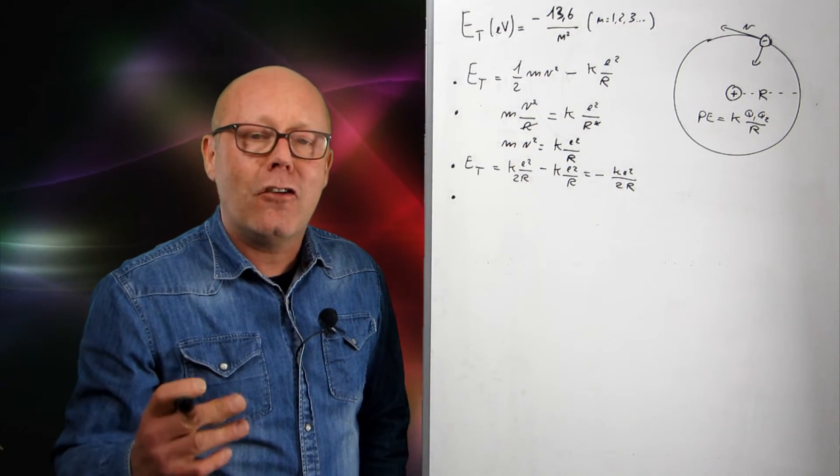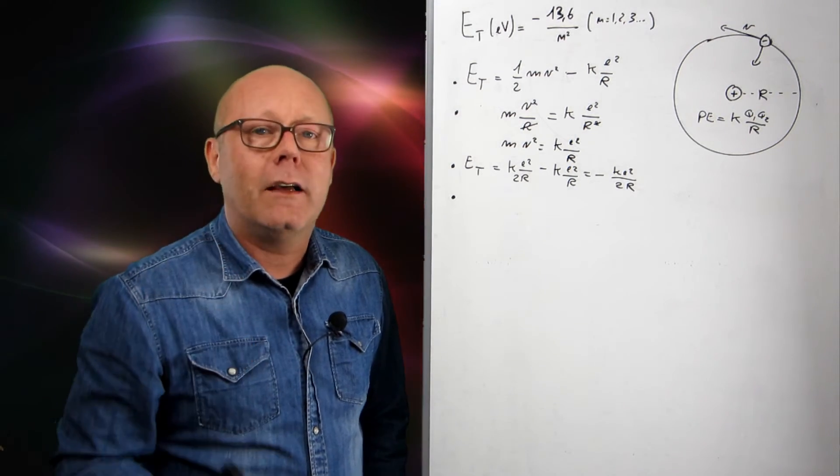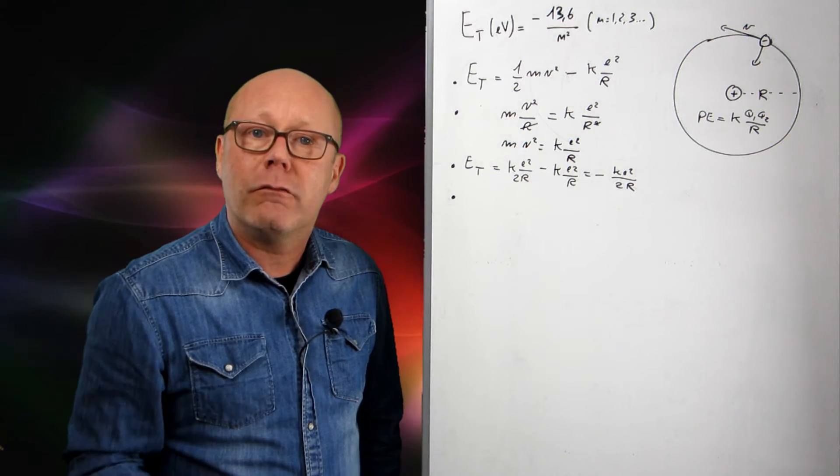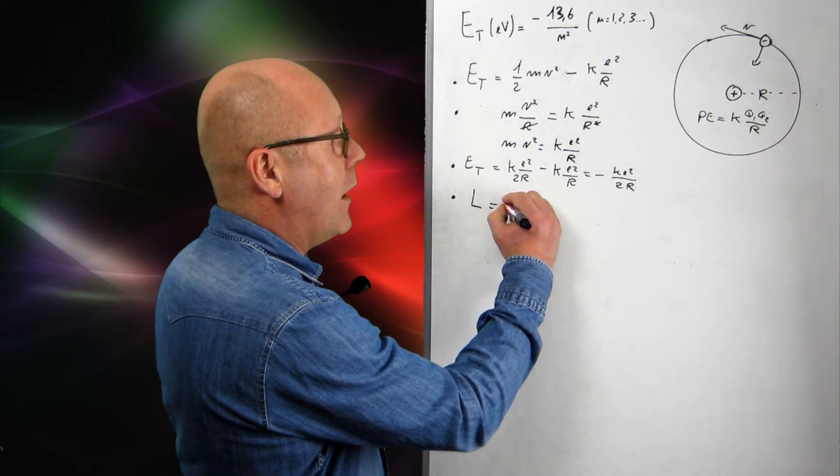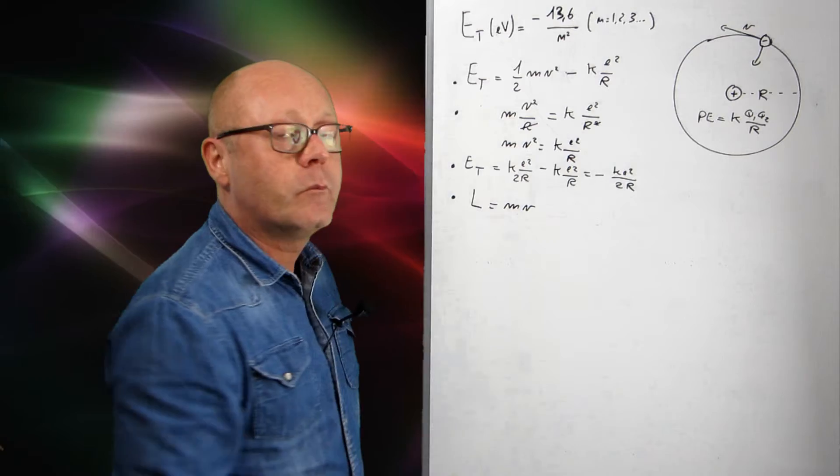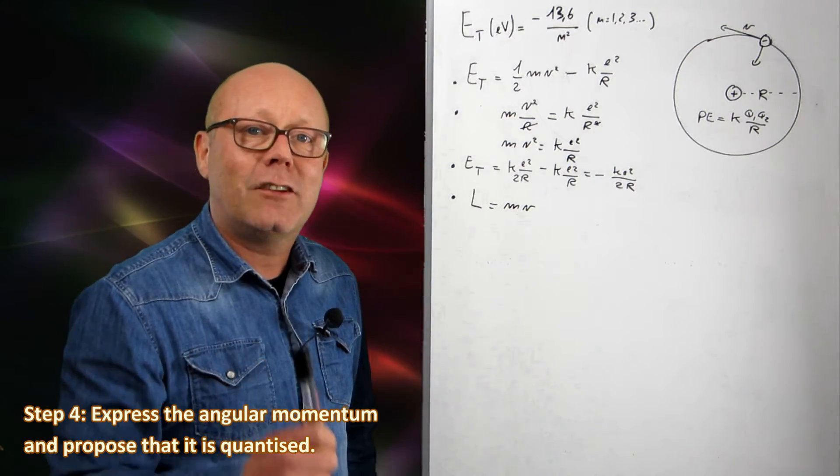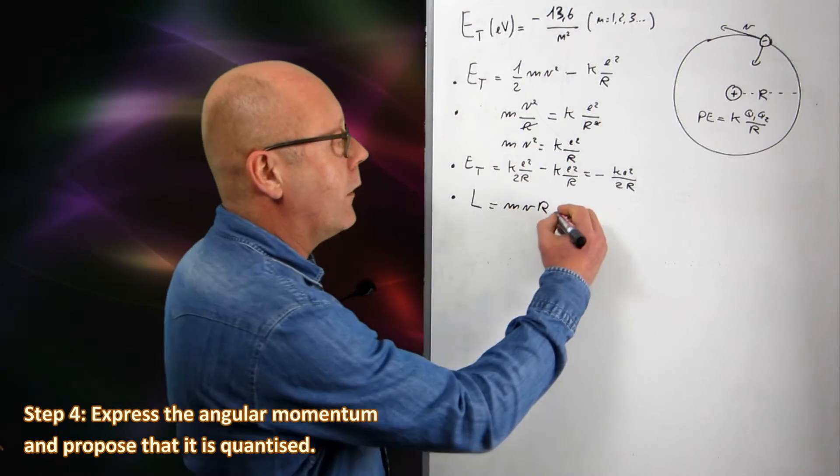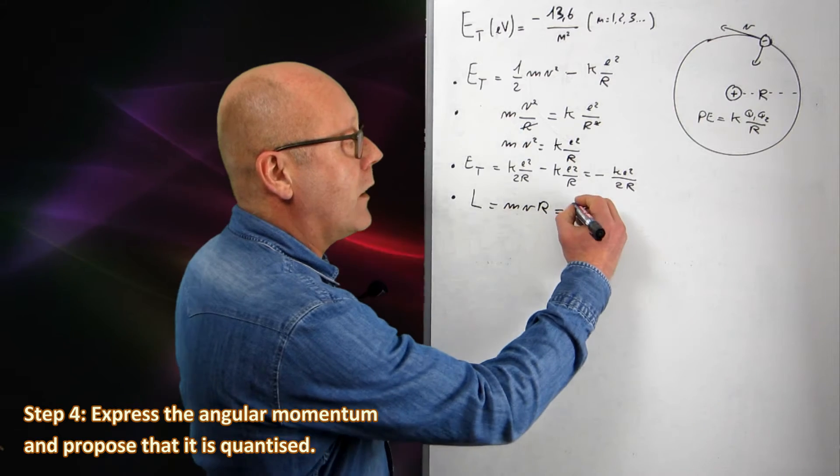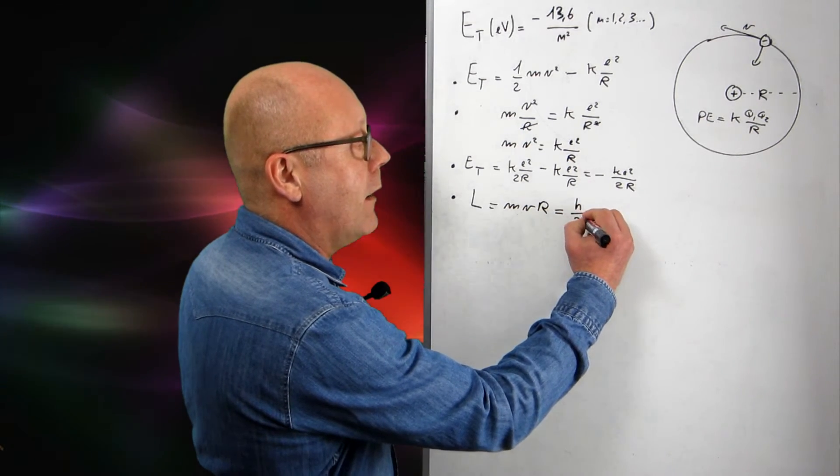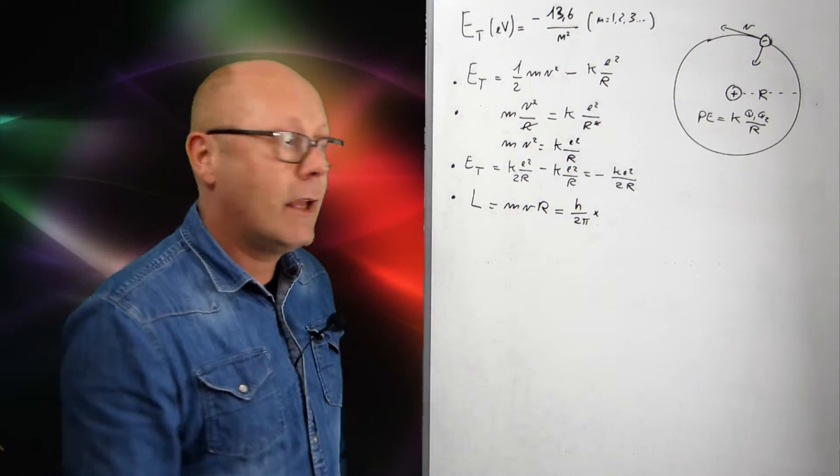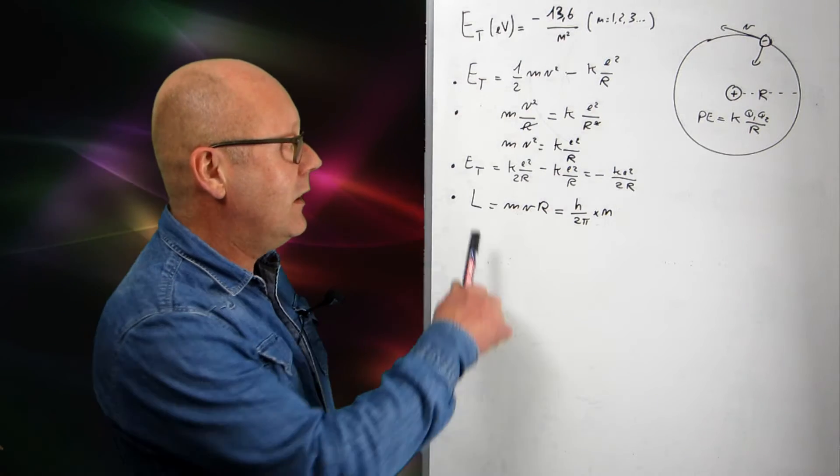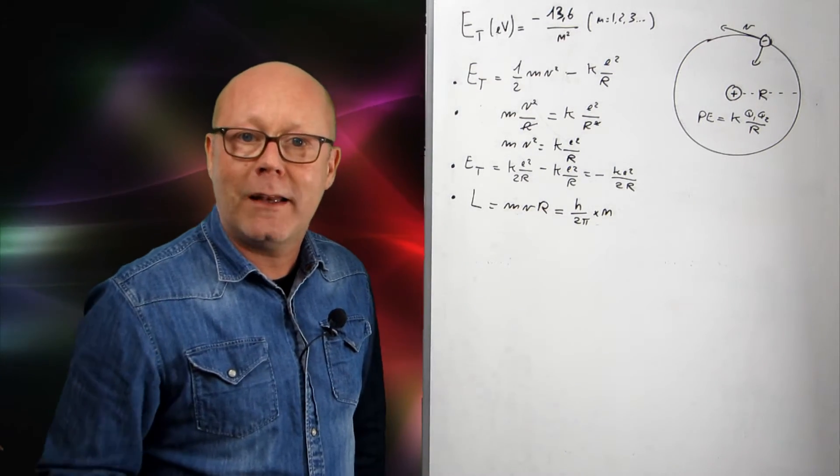He proposed that the angular momentum was quantized. So do you know what the angular momentum is? Well, it's just the momentum of an object in rotation. The angular momentum is equal to mvr, like the normal momentum, multiplied by the distance to its axis of rotation, so r. And Bohr said this quantity was quantized. So it is equal to a constant, which is a constant of Planck divided by 2pi, multiplied by an integral number, like n, like 1, 2, 3, etc. So you see, the angular momentum can only take certain values, depending on the value of n.